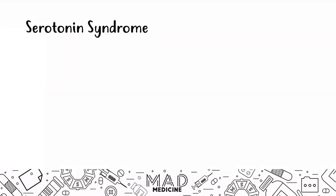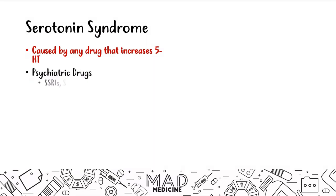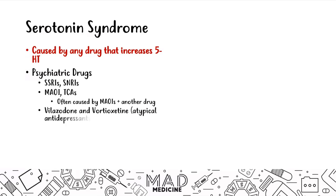Let's start off by talking about serotonin syndrome. Serotonin syndrome can be caused by any drug that increases serotonin levels — 5-hydroxytryptamine, aka serotonin. These can be psychiatric drugs like SSRIs, SNRIs, monoamine oxidase inhibitors, and tricyclic antidepressants, but most likely it's going to be a monoamine oxidase inhibitor along with another drug. Vilazodone and vortioxetine, which are atypical antidepressants, can also cause these side effects.